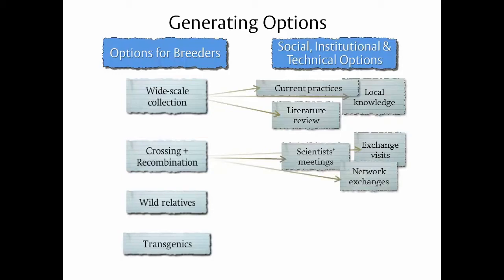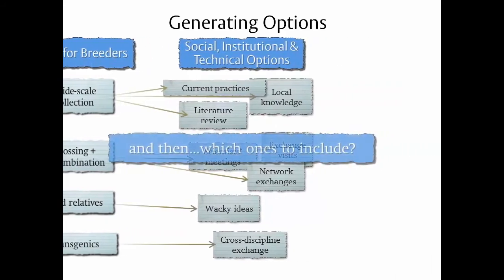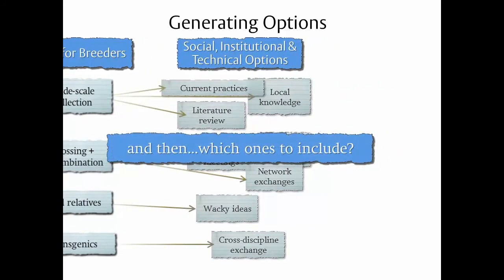I'm not sure quite what the parallel of the wild relatives is, but I do know of examples where including some seemingly wacky ideas in research has actually led to some very important outcomes. And perhaps the parallel to using transgenics is being able to take elements of an approach from one discipline and transplant them into what we're working on. This, of course, doesn't answer the question which of all the options we might generate we should be including in a particular study. I'll save that as a topic for another talk.